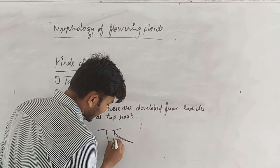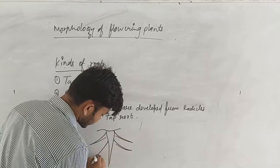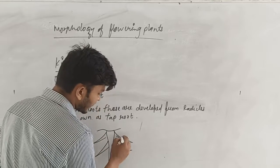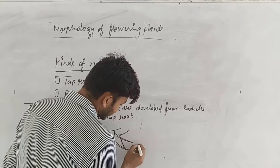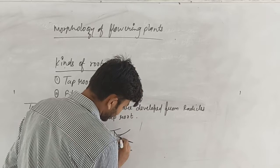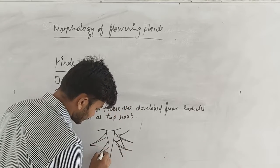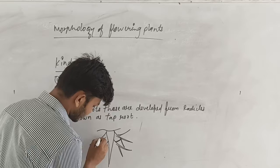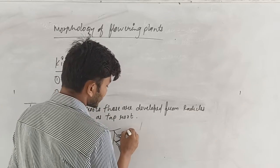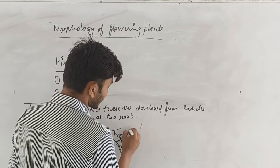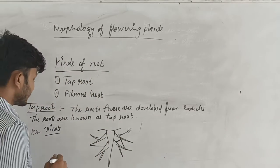What happens first is a primary root. It's known as the primary root. From the primary root comes the secondary root. And then the third root arises from the secondary root.